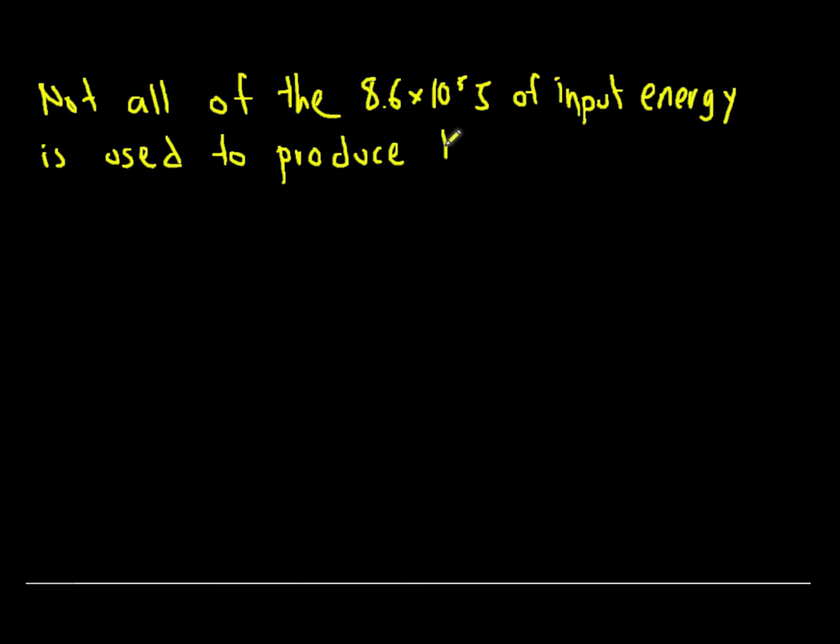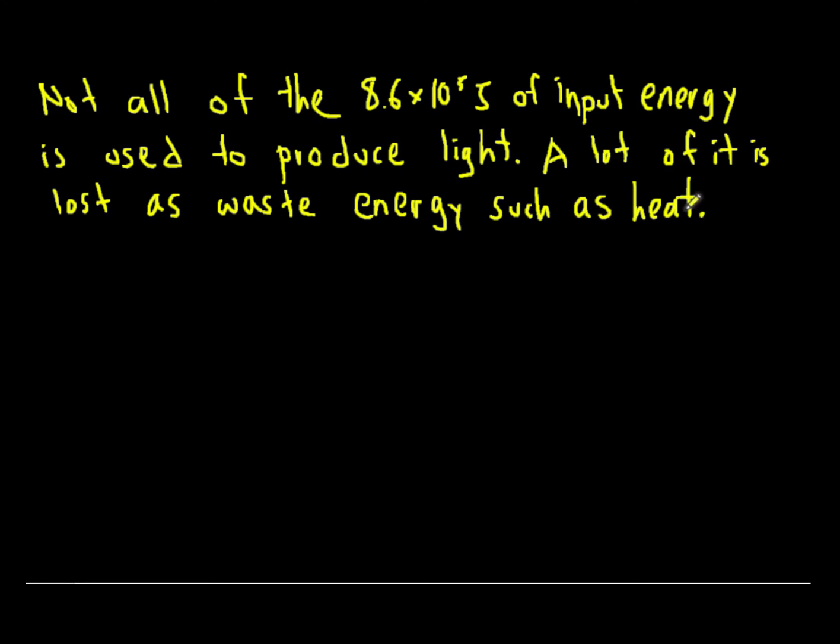It's important to realize how inefficient most machines are. Not all of the 8.6 times 10 to the 5 joules of input energy is actually used to produce light. Maybe you've put your hand on a light bulb before and noticed how hot it becomes. This is because a lot of the energy is lost as waste energy. One example of the waste energy is the heat energy you feel when you touch a light bulb.